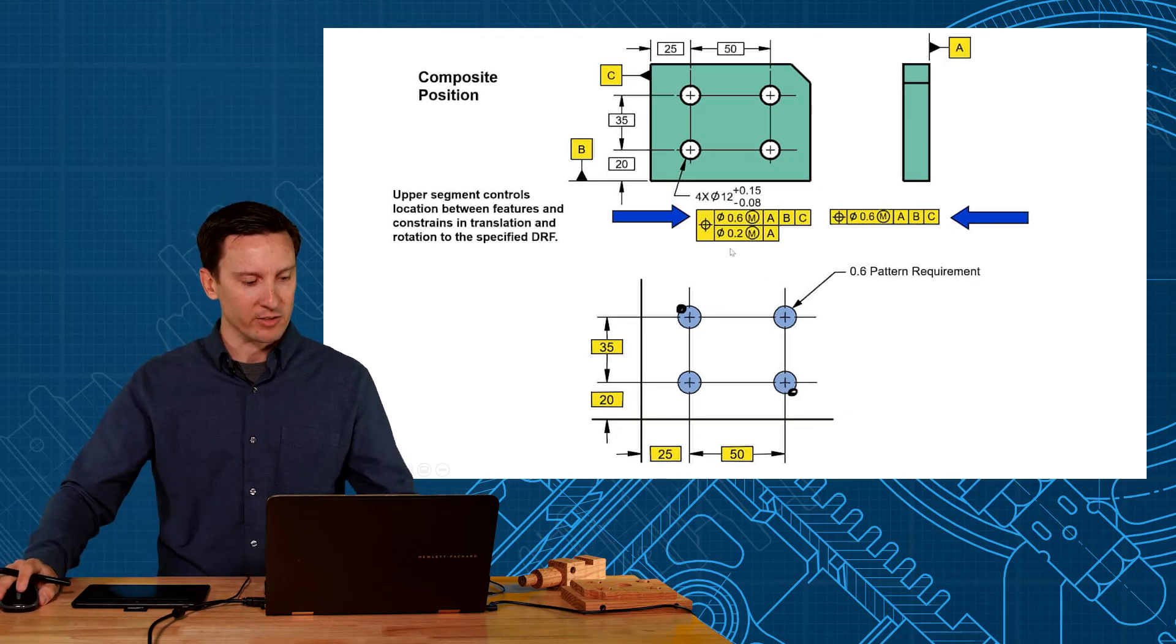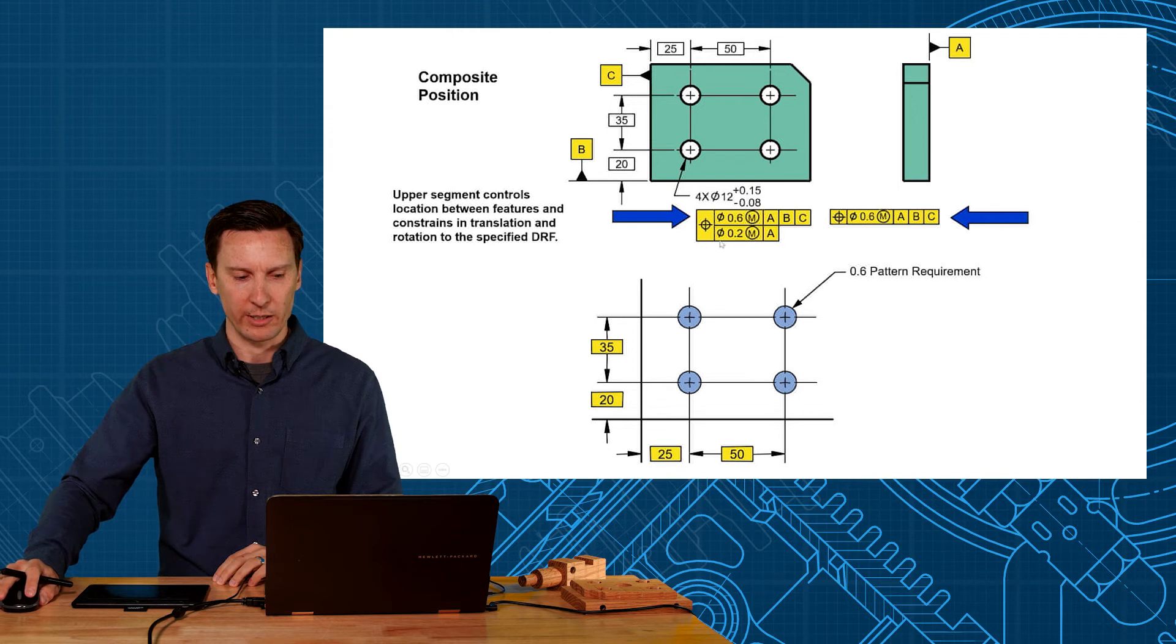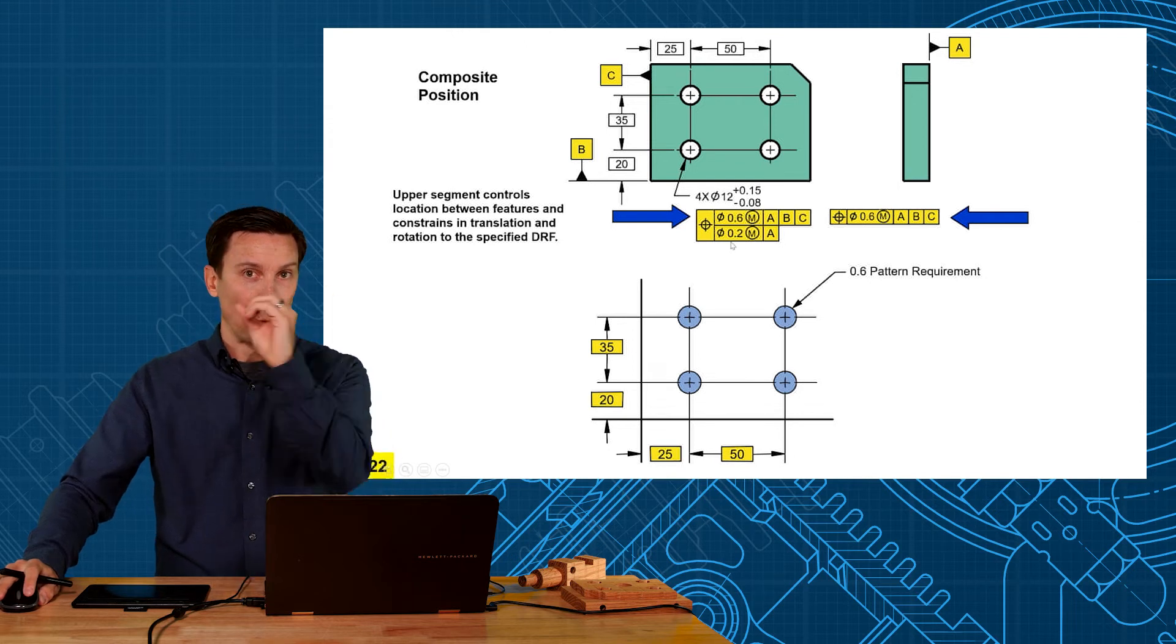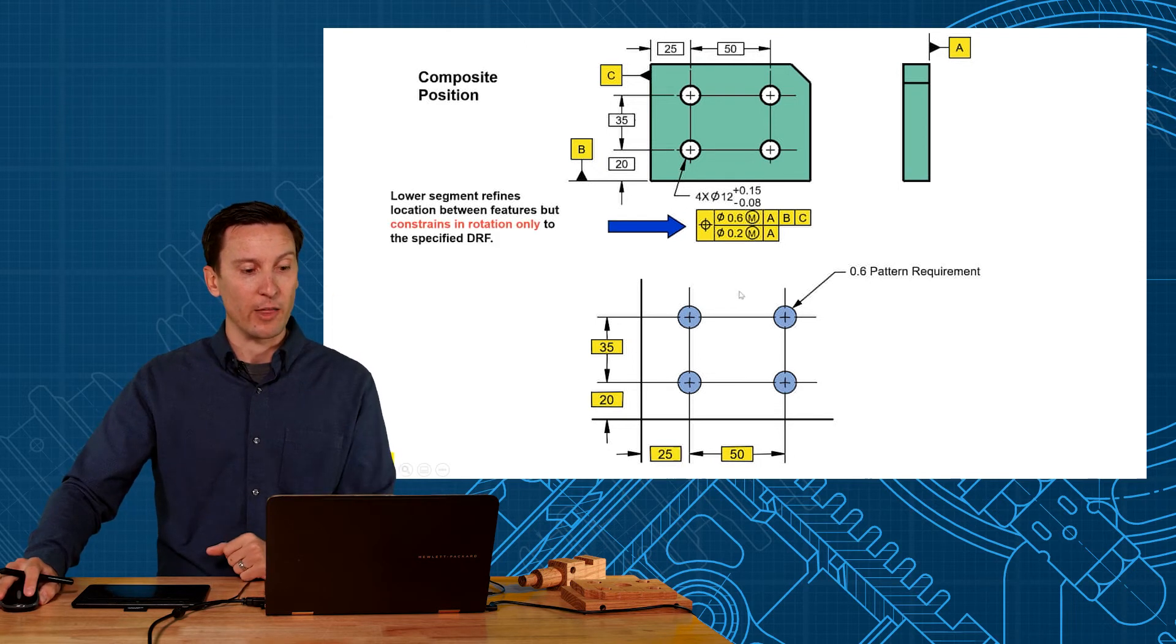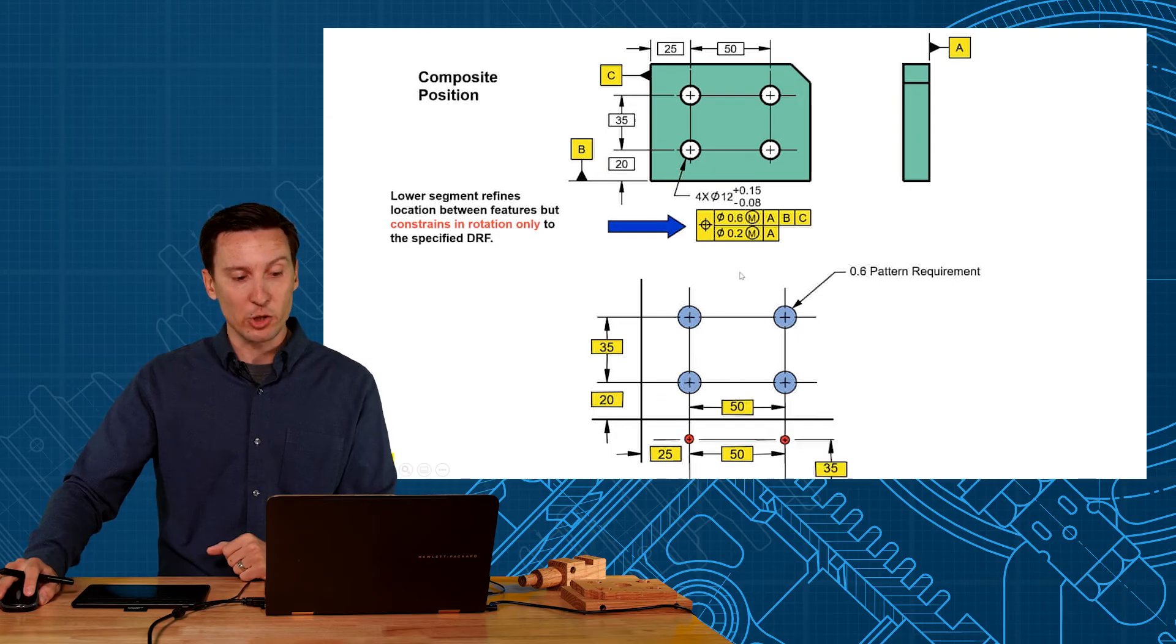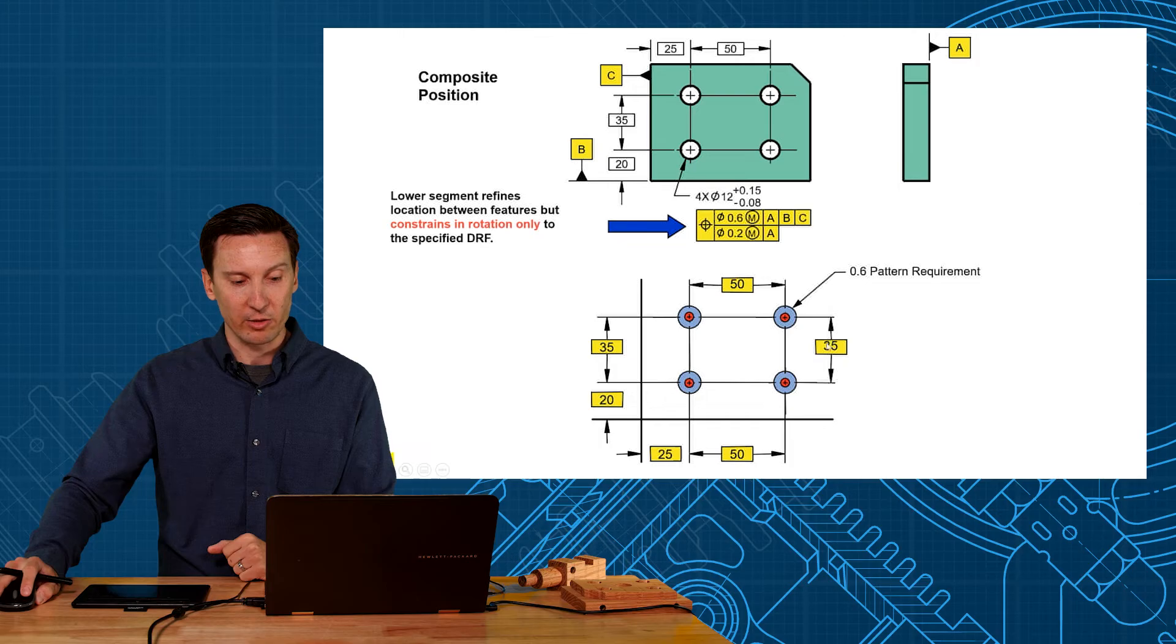But really I want the hole to hole to be much better. So we're going to add a set of tolerance zones with this 0.2. Well, they're going to be four cylinders of 0.2 that are basically located to each other. So look how they have a basic 50 and a basic 35 and of course 90 degrees between them as well. But there's no B and C there.